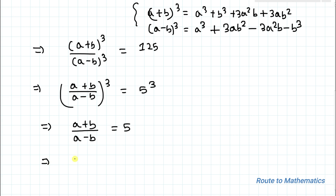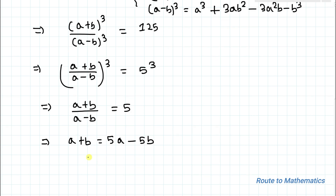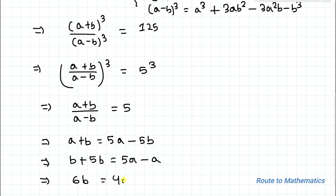By cross multiplication, we have a + b = 5a − 5b. Now taking −5b to the left-hand side and a to the right-hand side, we get b + 5b = 5a − a. So this implies 6b = 4a.